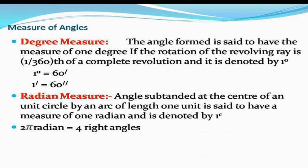If we divide 1 degree into 60 equal parts, each part is known as 1 minute — that is, 1 degree equals 60 minutes. If we divide each minute into 60 equal parts, each part is known as 1 second. So 1 minute equals 60 seconds.